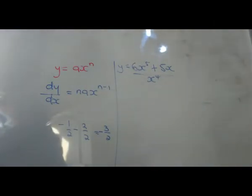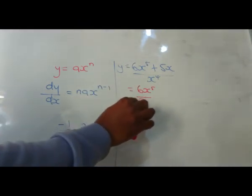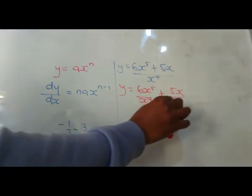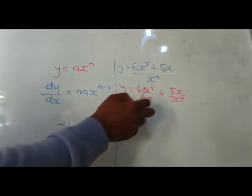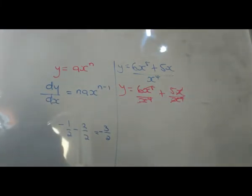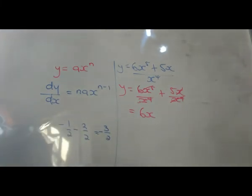We know this is the same as 6x to the power of 5 over x to the power of 4, plus 5x over x to the power of 4. So when we have x to the power of 4 into x to the power of 5, we only have x, so this result is 6x.